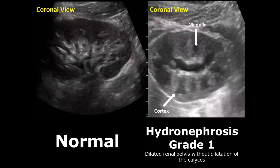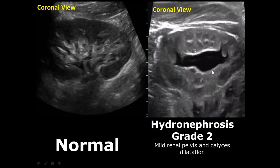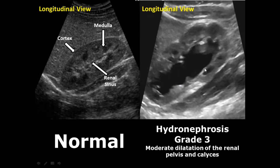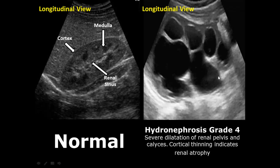In grade 1 hydronephrosis, the renal pelvis is dilated but the renal calyces are not dilated. In grade 2 hydronephrosis, both the renal pelvis and the renal calyces are dilated. In grade 3, dilation is to a greater degree compared to grade 2, and we can also see some cortical thinning. Grade 4 hydronephrosis shows a very large degree of dilation involving the entire kidney, with a higher degree of cortical thinning leading to renal atrophy.